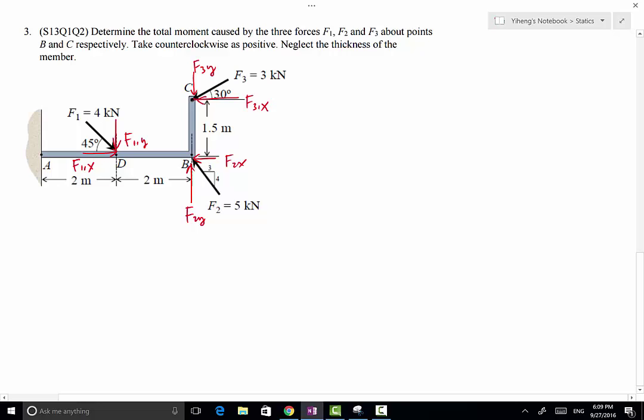The reason we want to do that is because these components are either horizontal or vertical, so their moment arms to point B and point C are a lot easier to determine than the moment arms of the original forces about these two points.